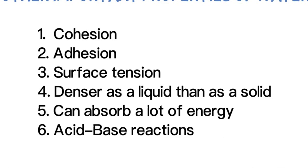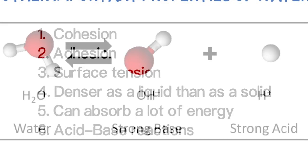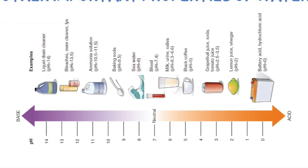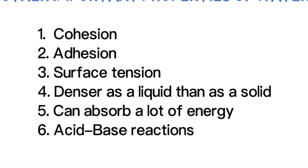The last important property of water is its unique ability to act as both an acid and a base in solution. Because it dissociates, it breaks apart into a hydrogen proton and an OH molecule known as hydroxide. This is critically important for pH — cells in our body are very sensitive to pH changes — so water plays a very important role in helping maintain homeostasis by actively participating in acid-base reactions that keep our body's pH at an optimal level.